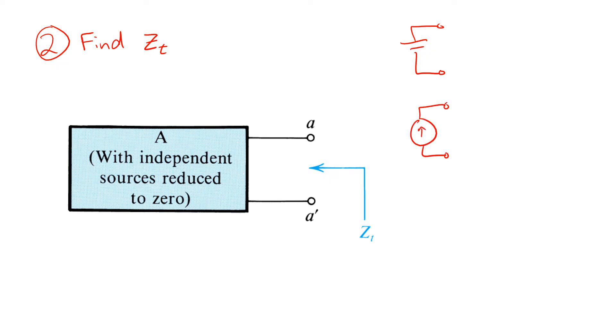Now, setting a voltage source to zero volts is just like replacing it with a short circuit. Setting a current source to zero amps is just like replacing it with an open circuit.